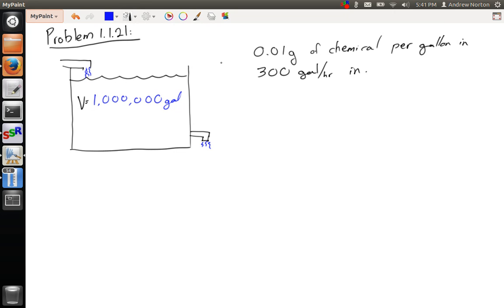So water comes in at 300 gallons per hour, and in each gallon of the water that comes in, we have 0.01 grams of an undesirable chemical.